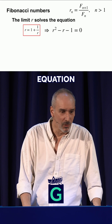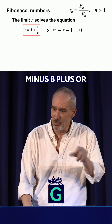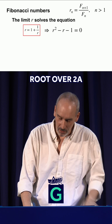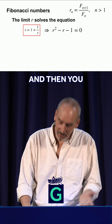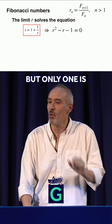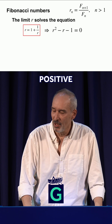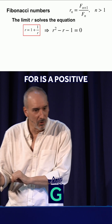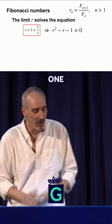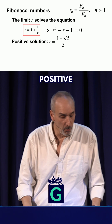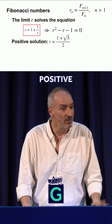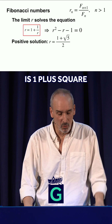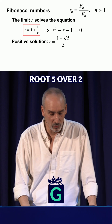Remember the quadratic formula? Minus b plus or minus square root, over two a. And then you have two solutions, but only one is positive. And since we know the ratio we're looking for is a positive one, we look at the positive solution. And that positive solution is one plus square root of five, over two.